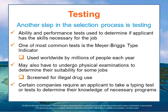Another step in the selection process is testing. Ability or performance tests are used to determine whether an applicant has the skills necessary for the job. One of the most commonly used tests is the Myers-Briggs Type Indicator, which millions of people take every year worldwide. Companies may also require physical examinations, drug screening, and — since computer knowledge is required for many jobs — keyboard or typing tests to assess knowledge of MS Word, Excel, PowerPoint, and other programs.